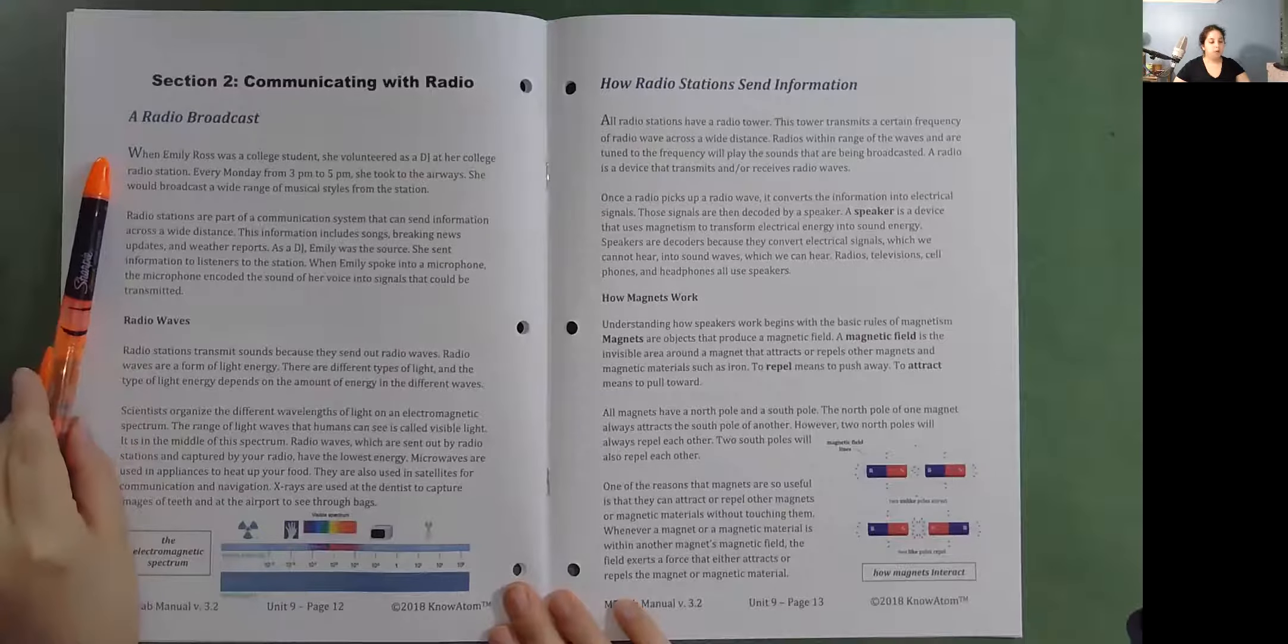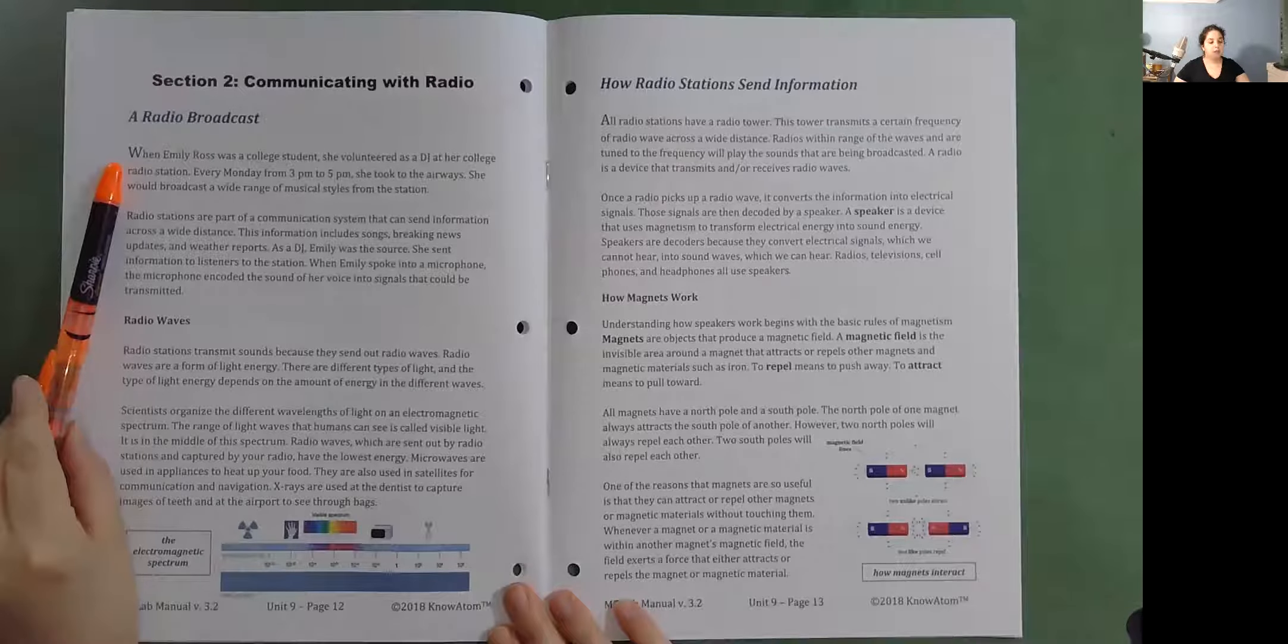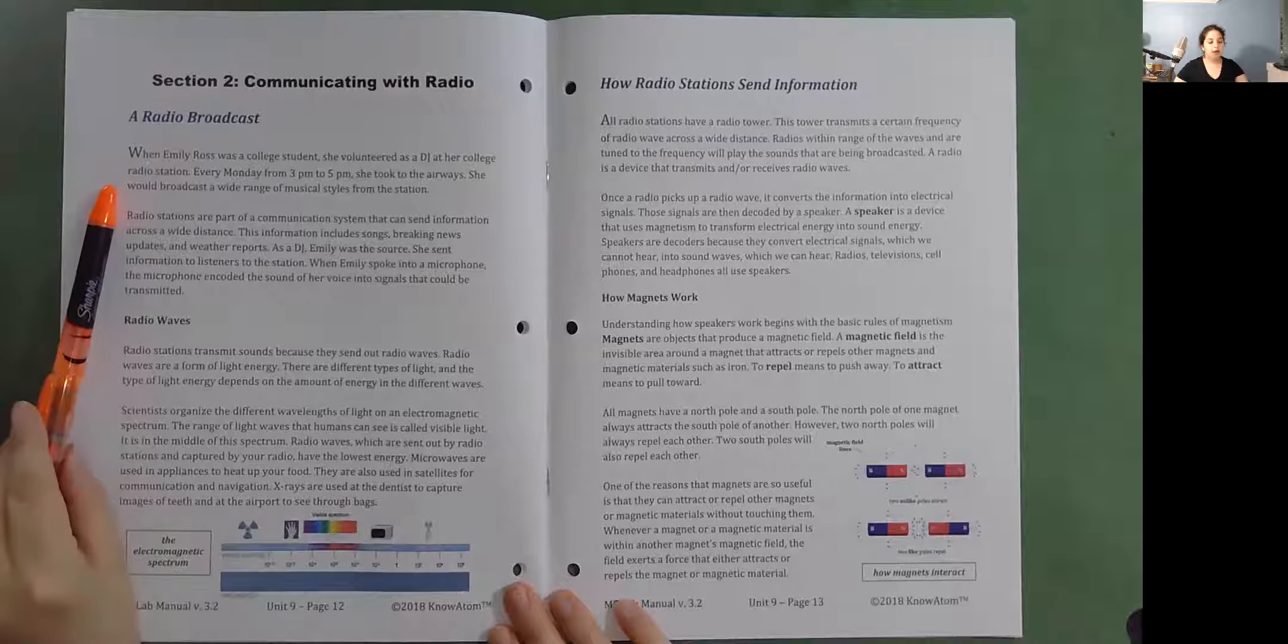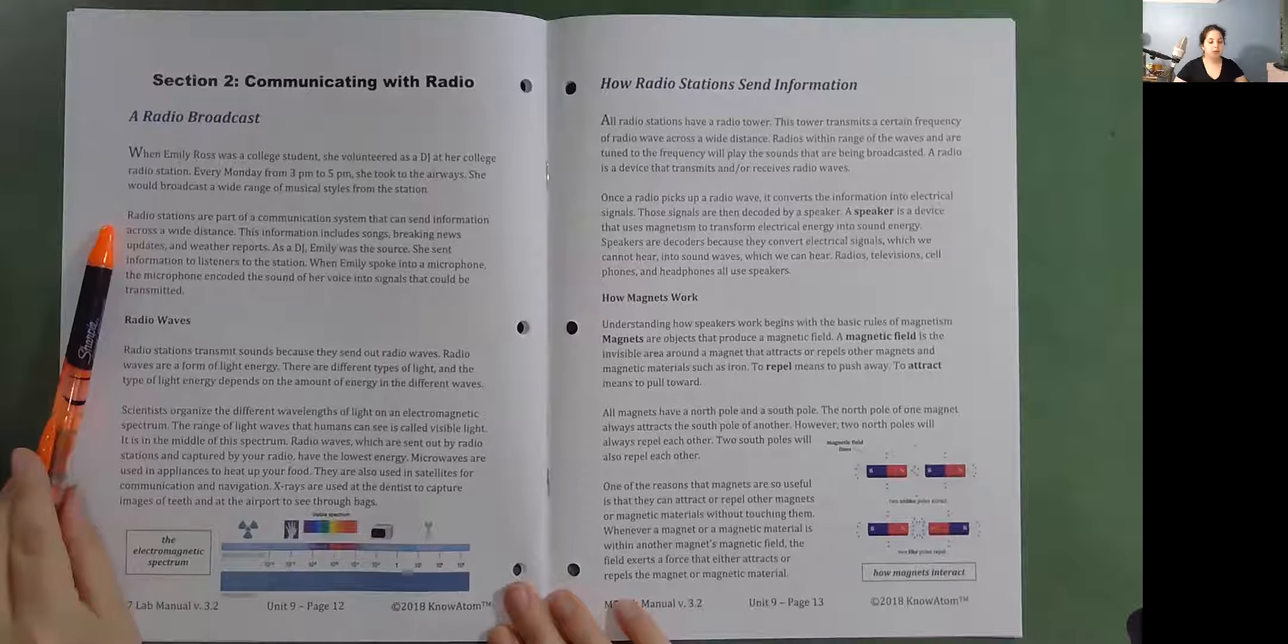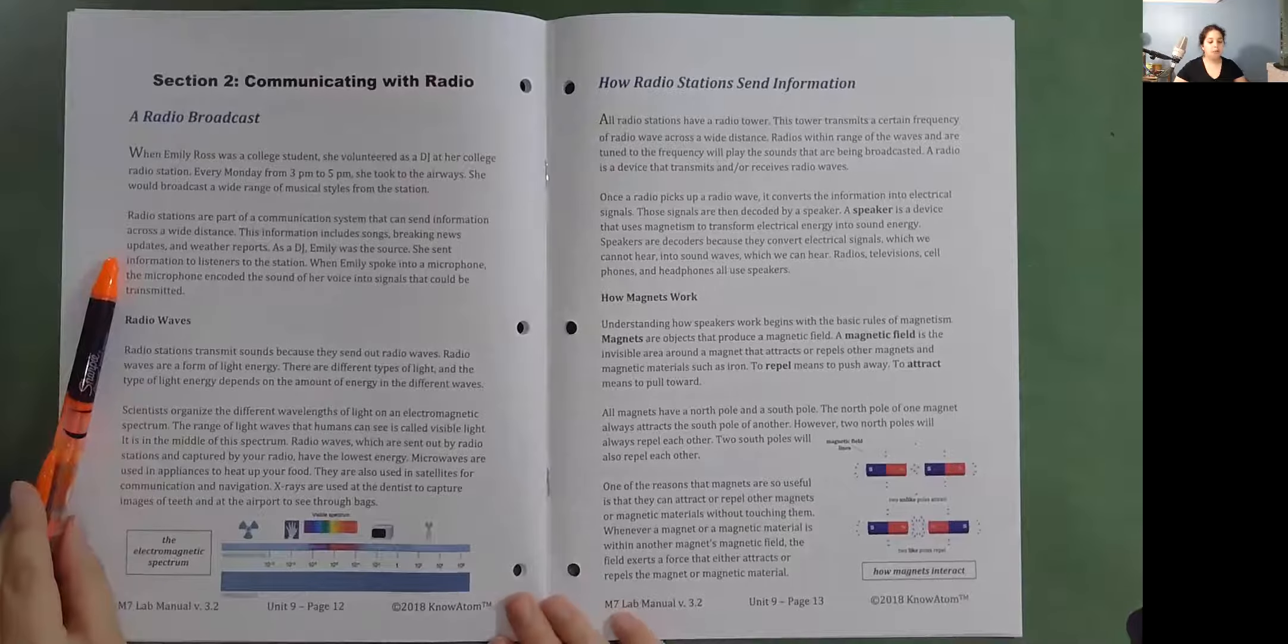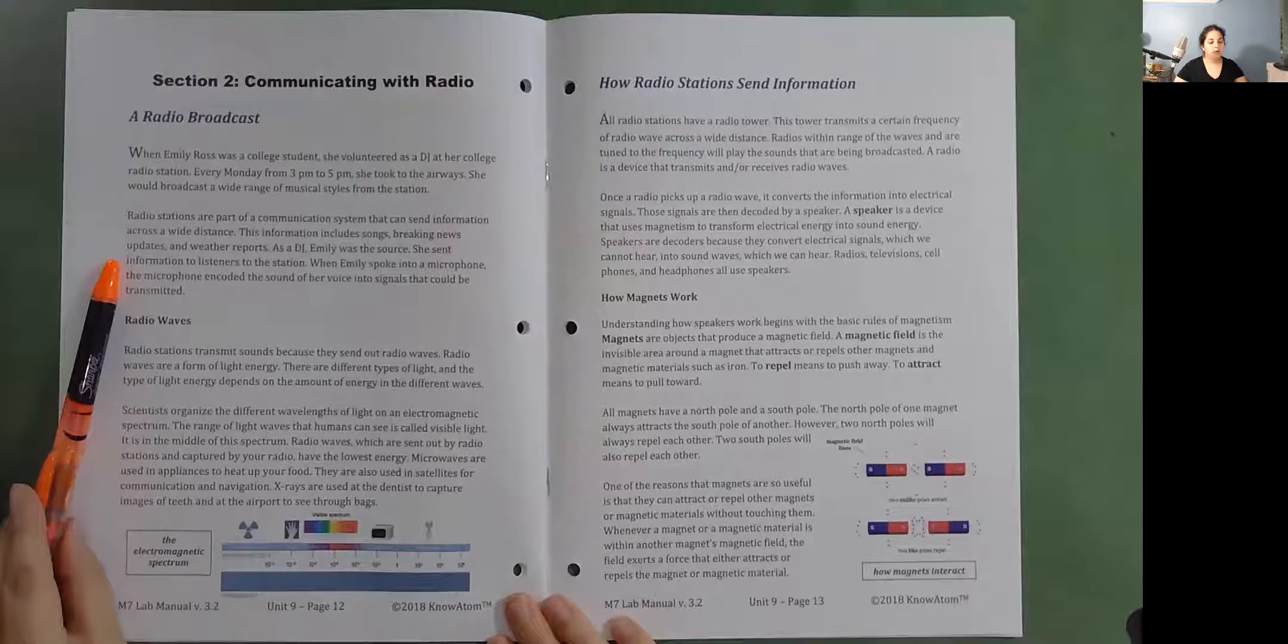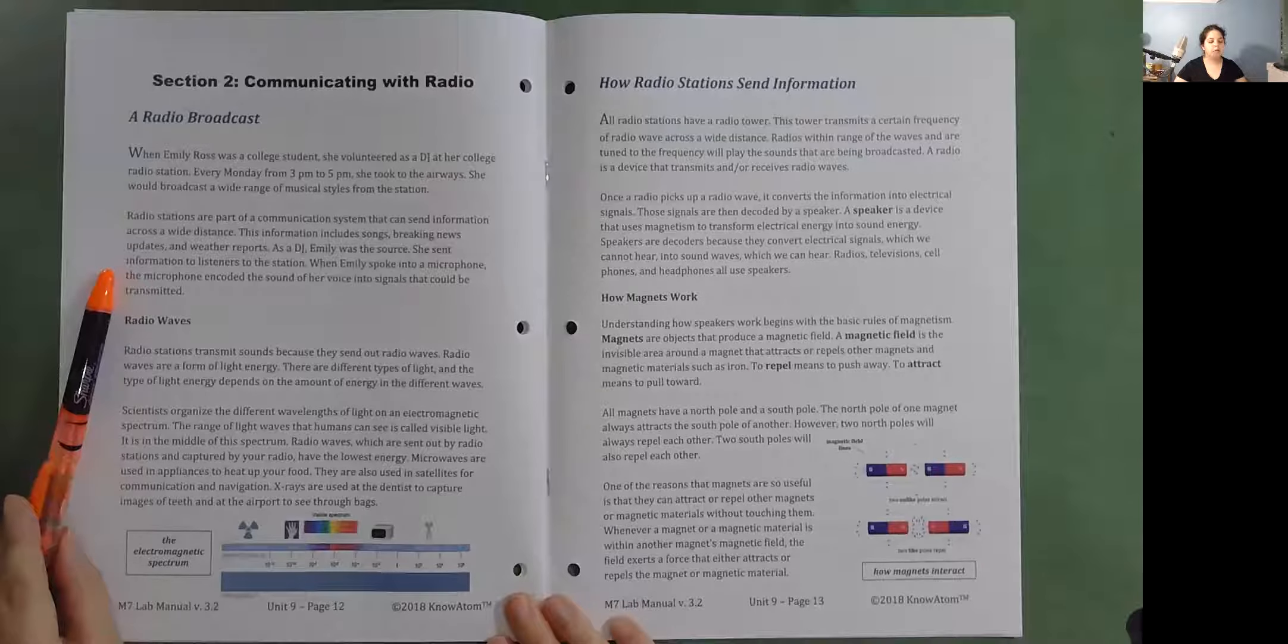When Emily Ross was a college student, she volunteered as a DJ at her college radio station. Every Monday from 3 p.m. to 5 p.m., she took to the airwaves. She would broadcast a wide range of musical styles from the station. Radio stations are part of a communication system that can send information across a wide distance. This information includes songs, breaking news updates, and weather reports. As a DJ, Emily was the source. She sent information to listeners to the station. When Emily spoke into a microphone, the microphone encoded the sound of her voice into signals that can be transmitted.